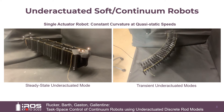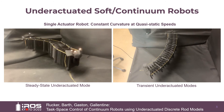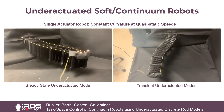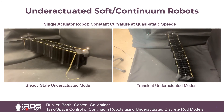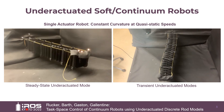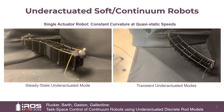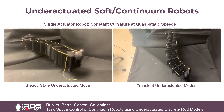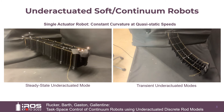Even for a robot designed for constant curvature at quasi-static speeds, underactuated modes can significantly affect the performance of dynamic tasks and can appear in both steady state and transient components of the motion.